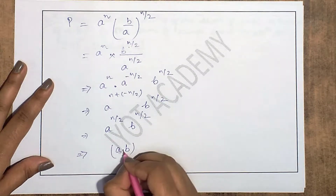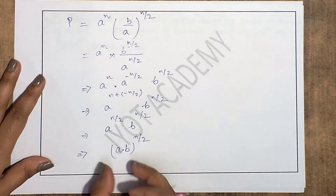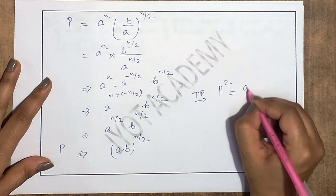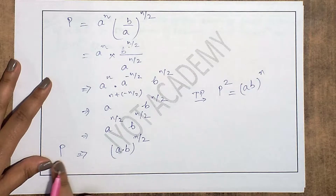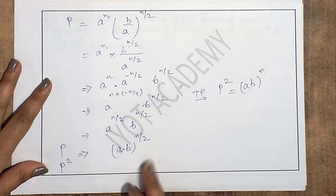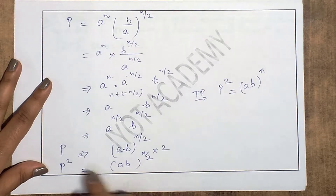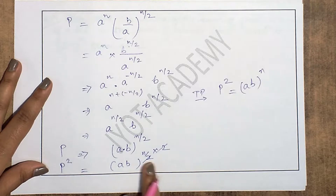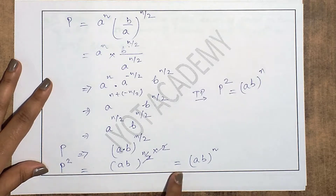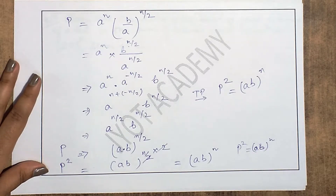We can write a^(n/2) · b^(n/2) = (a·b)^(n/2). But the question requires p² = (ab)^n. So P = (ab)^(n/2) means P² = (ab)^n. Hence proved.